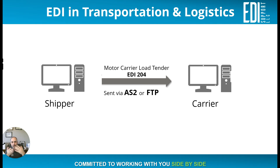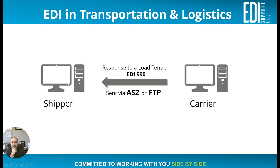Looking at the flow: a shipper has a product they need to send and requests a carrier to move it. In EDI, they use a Motor Carrier Load Tender, also known as a 204 document. This is sent either via AS2 or FTP from the shipper's system to the carrier's system.